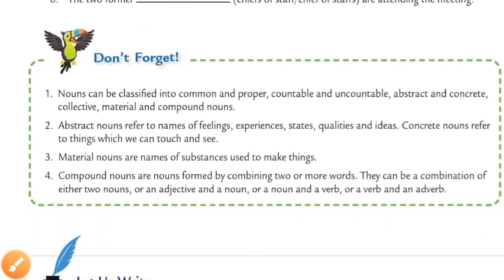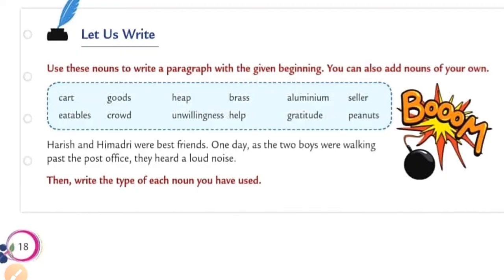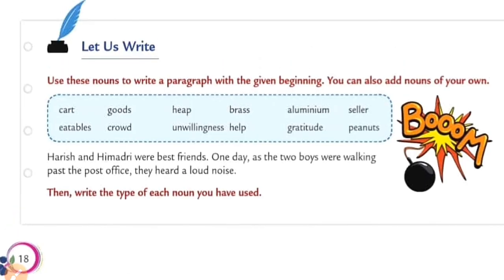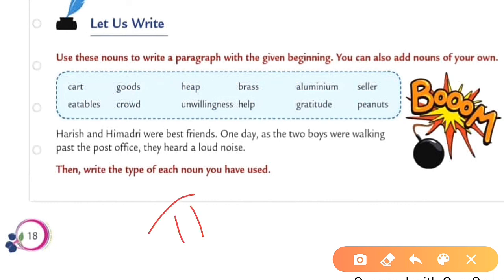There are some notes you can revise. Let us revise: use the nouns to write a paragraph with the given beginning — you can also add nouns of your own. Some nouns are given in the box and you have to write any story or paragraph using them. I hope everyone understood the chapter. If there is any confusion, you can text me or call me. Thank you.